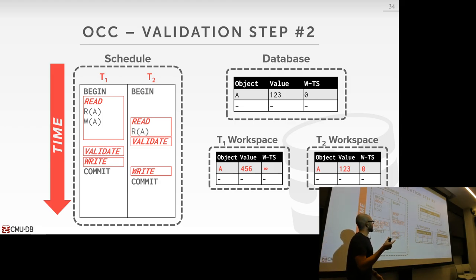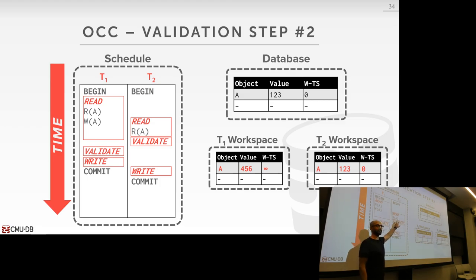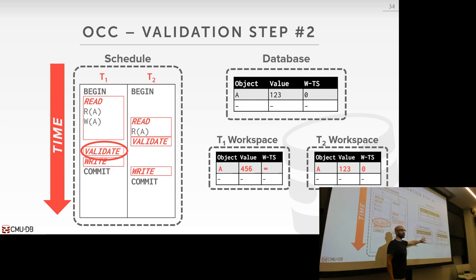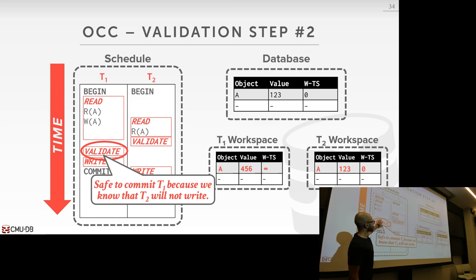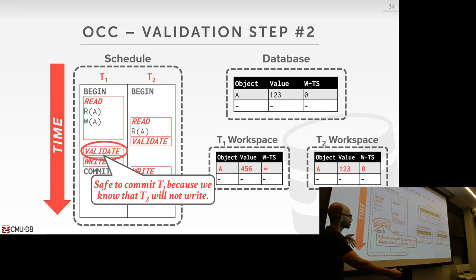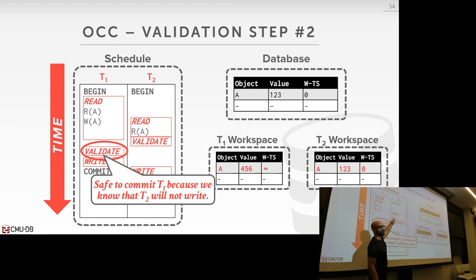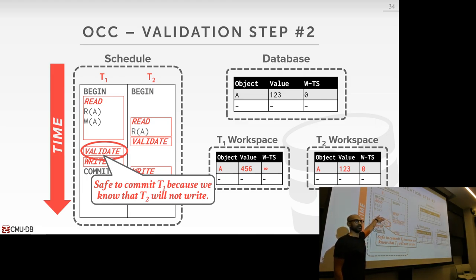Tweaking the example so T2 begins validation before T1: in the serial order, T2 happens before T1. T2 reads A, validates — no write set, commits. T1 then does its write of A. Its write set doesn't intersect with any concurrent transaction because T2 has already committed. So T1 validates and installs its write, and everything is fine.